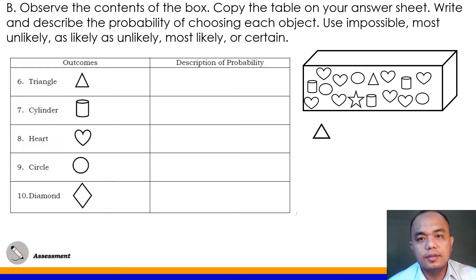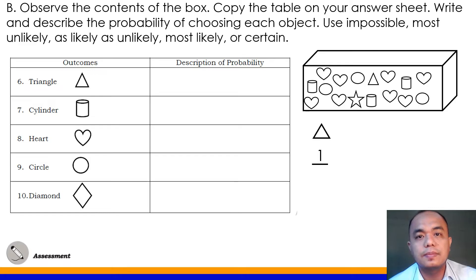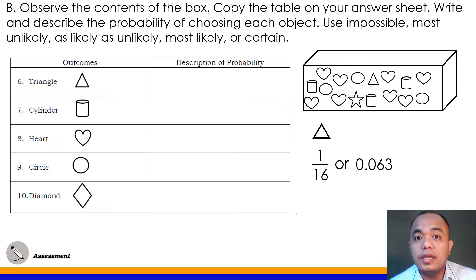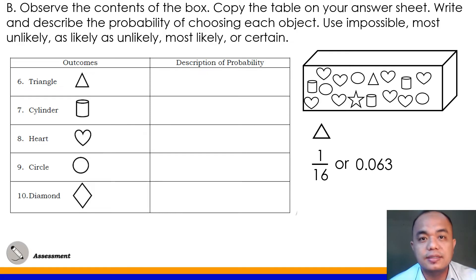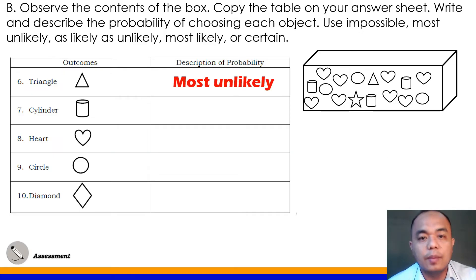Number 6: Triangle. Inside the box we have 1 triangle out of 16 shapes total. 1 divided by 16 equals 0.063. Plotting this probability on our scale, it is near impossible, so the answer for number 6 is most unlikely.